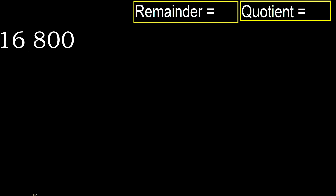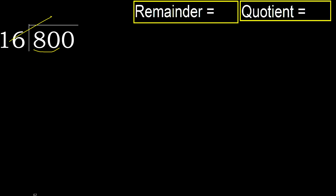800 divided by 16. 8 is less, therefore next. 80 is not less, therefore with 80. 16 multiplied by which number is nearest to 80, but not greater.